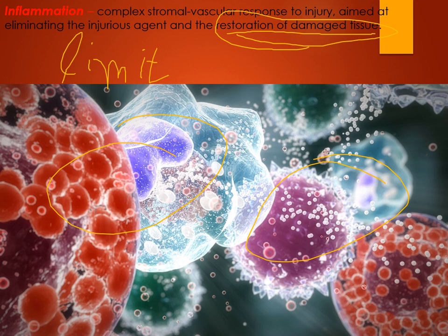The word inflammation comes from the Greek language and the suffix is '-itis'. Whenever you see any term ending with '-itis', it means inflammation — such as polyserositis and polyarthritis. These are all examples of inflammation.